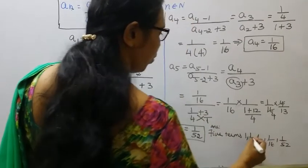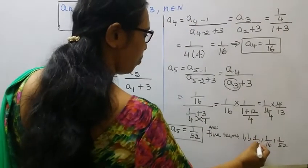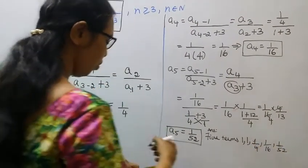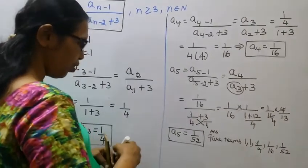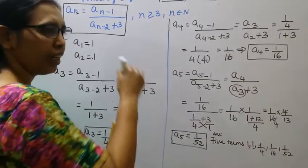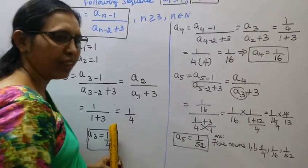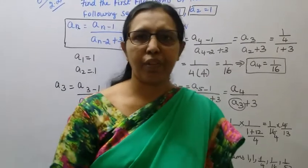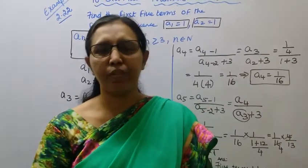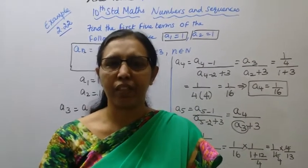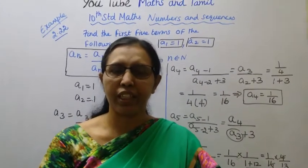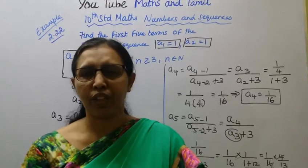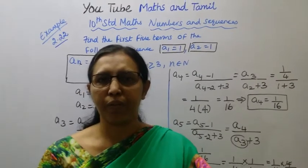The first 5 terms are: 1, 1, 1 by 4, 1 by 16, 1 by 52. That is the answer. You can practice on this channel — it helps you get 100 marks. Please subscribe to the channel and click the bell button.